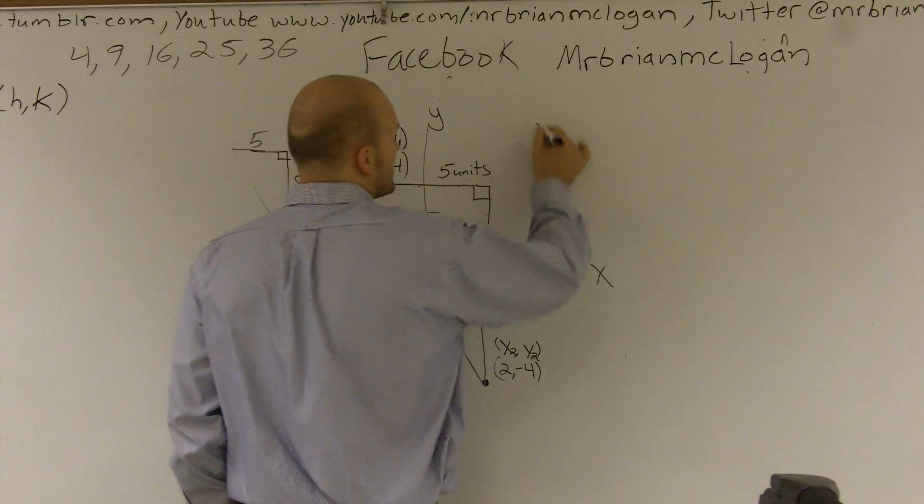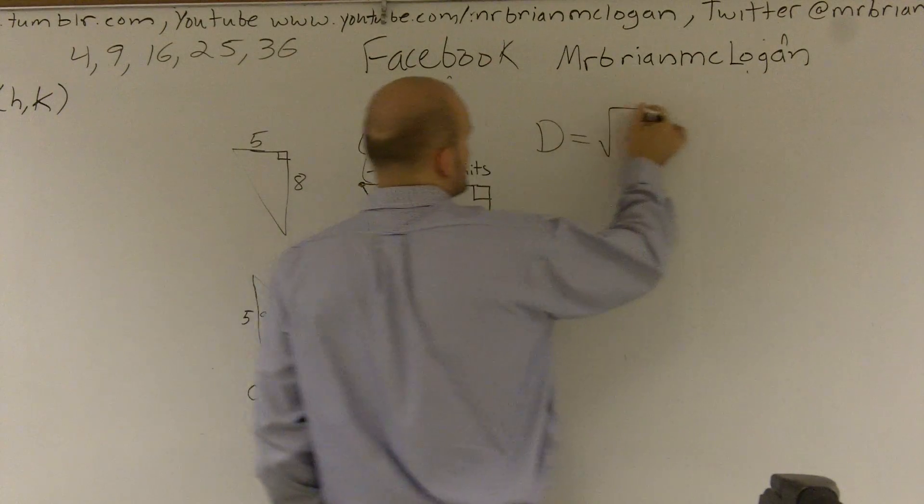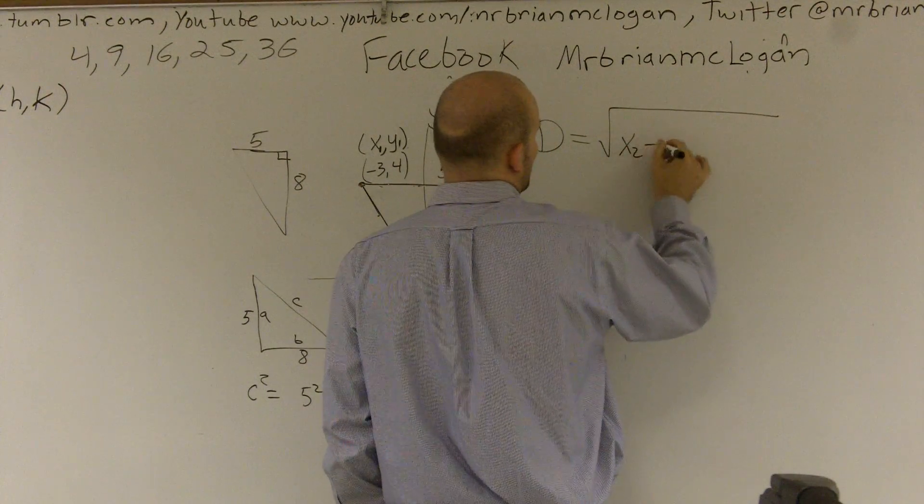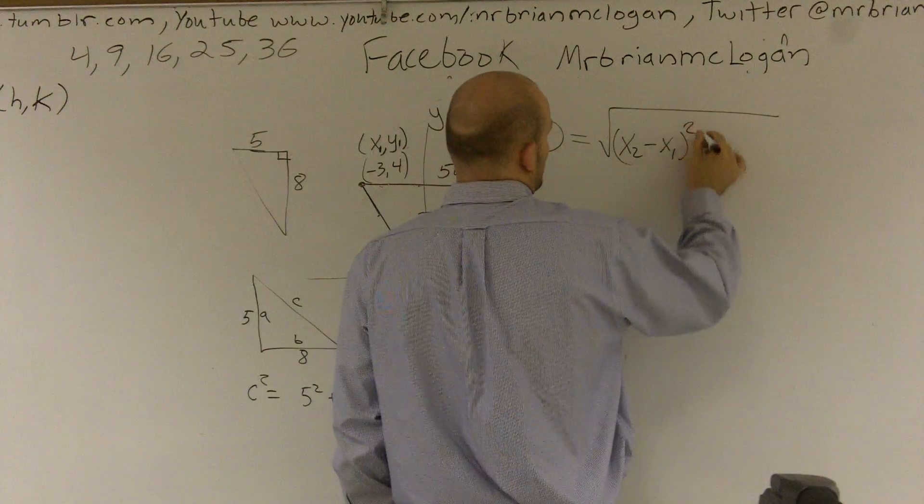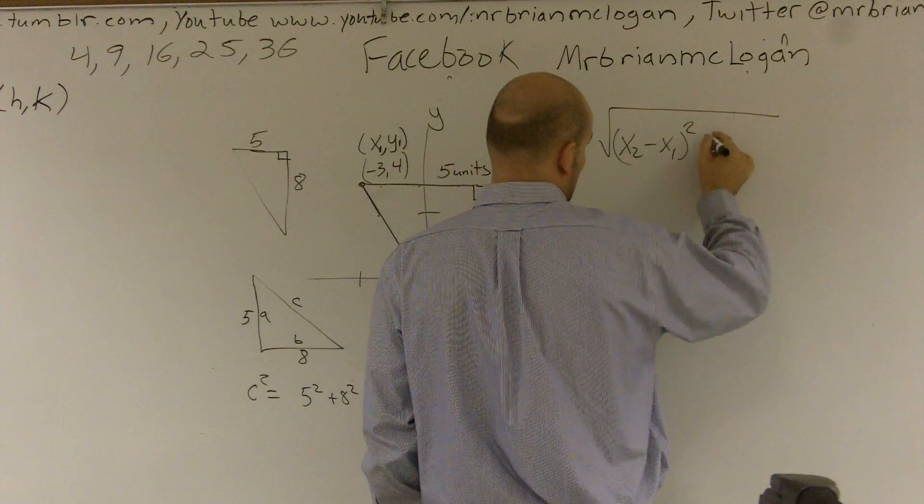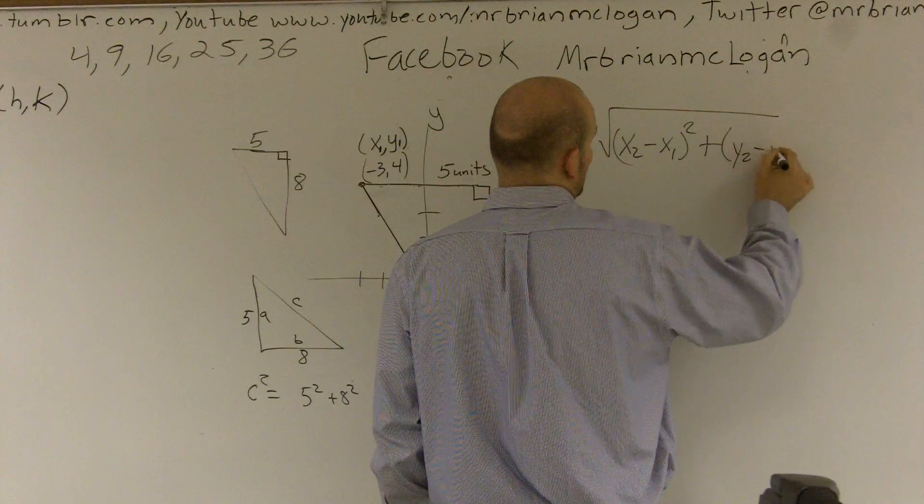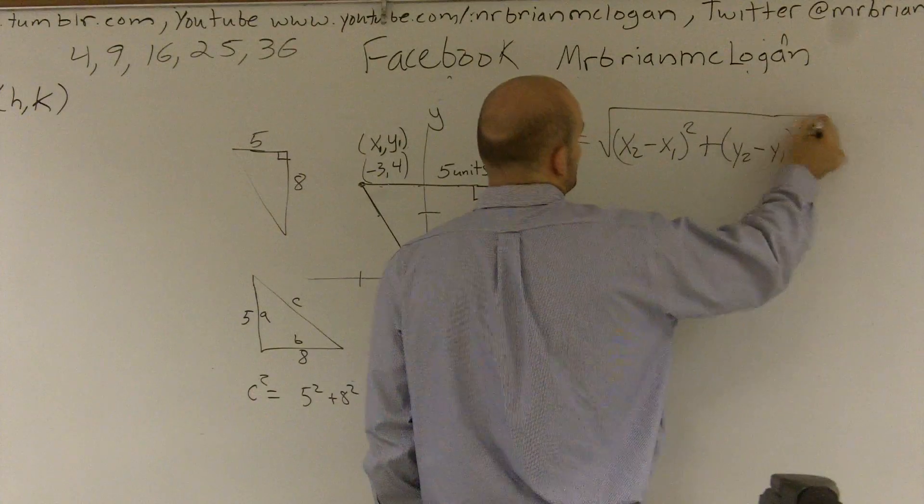The distance formula is written like this: the square root of x2 minus x1 squared plus y2 minus y1 squared.